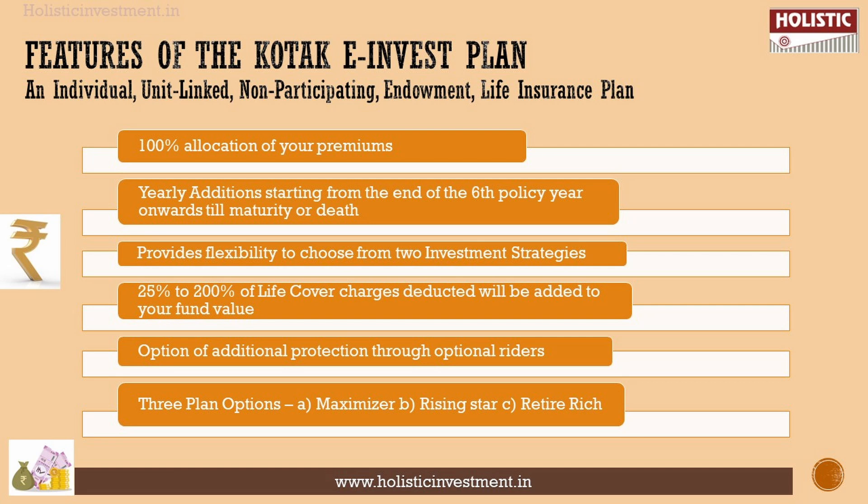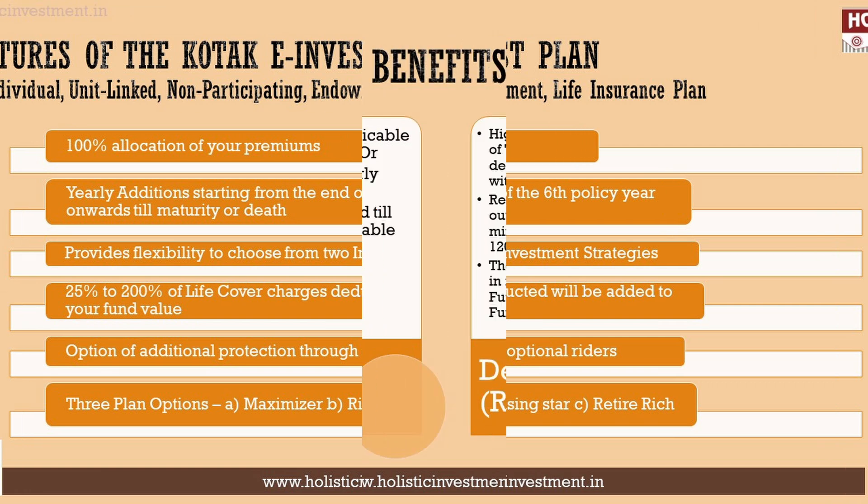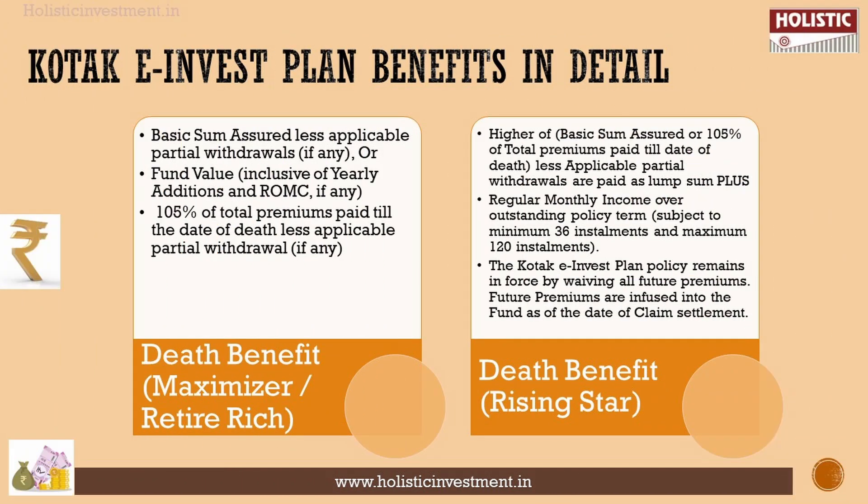The three plan options are Maximizer, Rising Star, and Retire Rich. If you have benefits available, we will talk about what we need. First, we will talk about death benefits. There are different death benefits for the Maximizer, Retire Rich, and Rising Star plans.